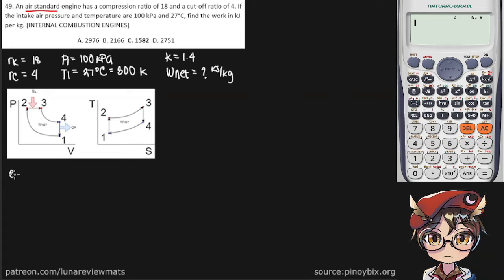Anyway, we know that the cycle efficiency is given by network over QA. And we know that QA is simply the mass of the diesel times the specific heat at constant pressure, and our temperature difference of T3 minus T2, because the heat addition is occurring here. M simply becomes 1 because we're trying to find the answer in per kilogram basis. Cp of diesel is 1 kilojoule per kilogram Kelvin. So we really just need to find T3 and T2.